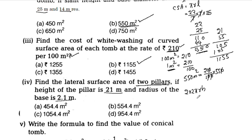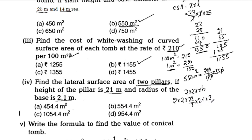We will substitute the values. π = 22/7, r = 2.1m, height = 21m.